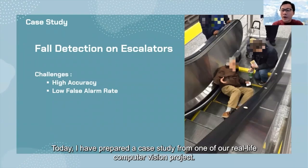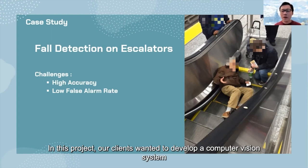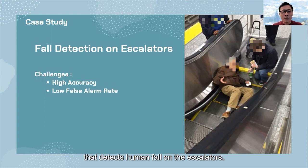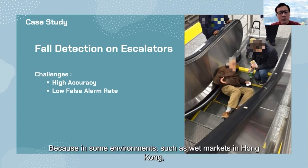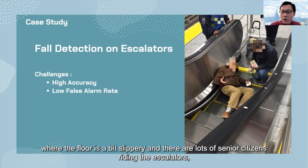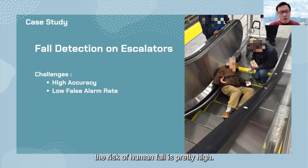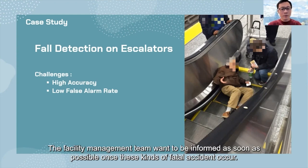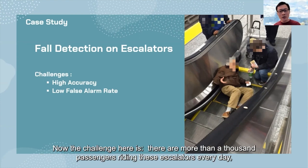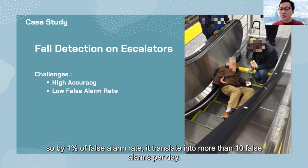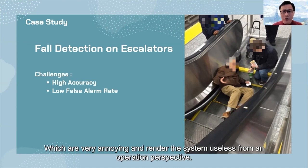Today I've prepared a case study from one of our real-life computer vision projects. Our client wanted to develop a computer vision system that detects human falls on escalators. In environments like wet markets in Hong Kong, where the floor is slippery and there are many senior citizens riding escalators, the risk of human falls is pretty high. The facility management team wanted to be informed as soon as possible when a fatal accident occurred. The challenge: with more than 1,000 passengers riding the escalator every day, even a 1% false alarm rate translates into more than 10 false alarms per day — very annoying and rendering the system useless from an operational perspective.